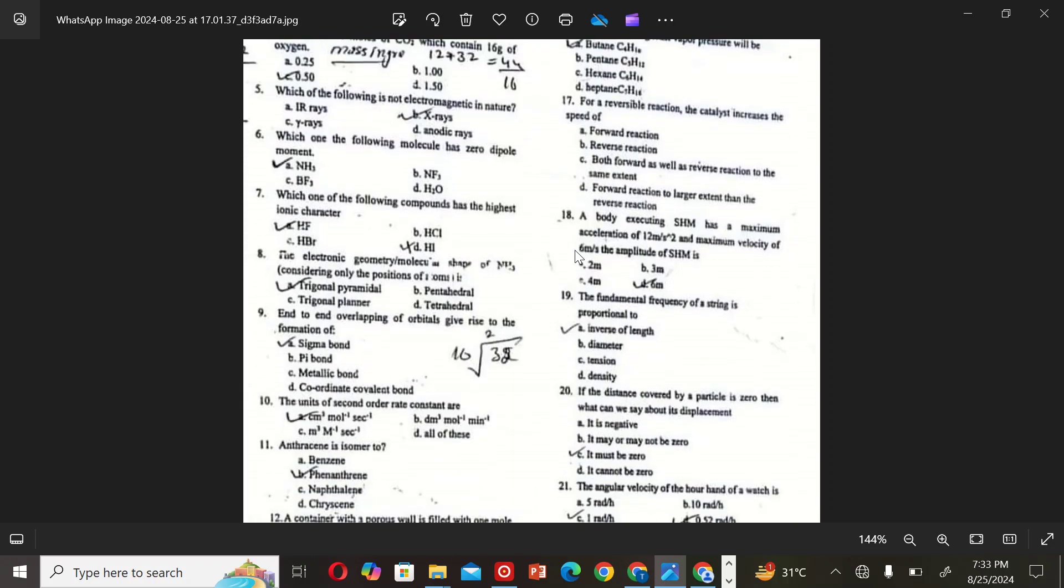The next MCQ is: A body executing simple harmonic motion has a maximum acceleration of 12 meters per second squared and maximum velocity of 6 meters per second. The amplitude of simple harmonic motion is? The correct option is B, 3 meters. The next MCQ is: The fundamental frequency of a string is proportional to? The correct option is A, inverse of length.